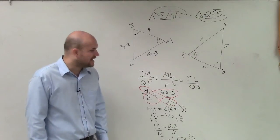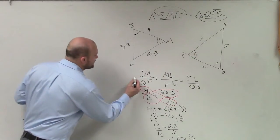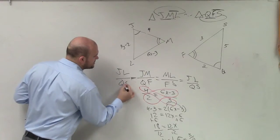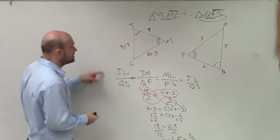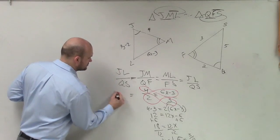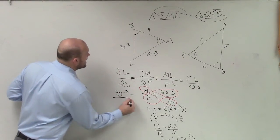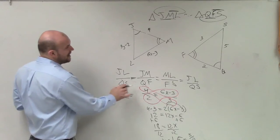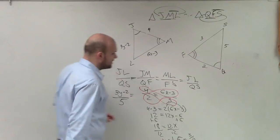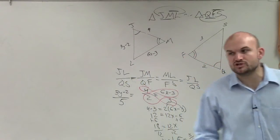Now I need to find JL and QS. I'm actually going to write it over here. JL over QS. The reason being, ladies and gentlemen, is what's JL? JL is 3y minus 2. And QS is 5. So if I write my proportion over here, now I can do cross multiplication again.